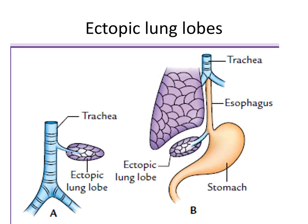There may also be ectopic or extra lung lobes. Ectopic lung tissue may be present anywhere — for example, near the stomach. These are called ectopic lung lobes. That is all about respiratory system development. Thank you.